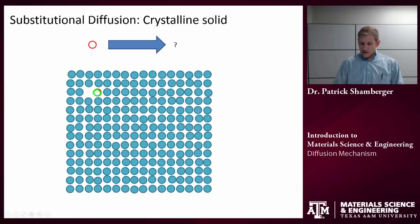And so eventually this vacancy could wander along and it could interact with this atom that I'm interested in following. And by taking this one step, this one hop to the right, I've essentially allowed this substitutional atom to diffuse. It has moved in the lattice, right?